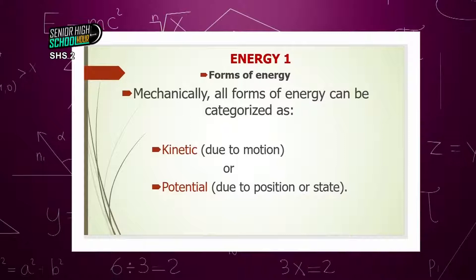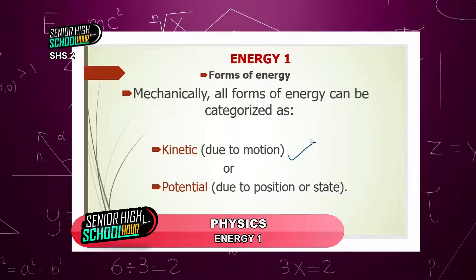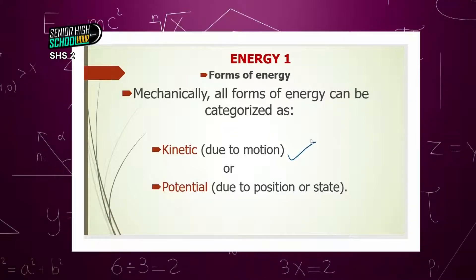We can move ahead and look at forms of energy. Mechanically, we can categorize all forms of energy as either kinetic — which is due to motion — or potential. Kinetic energy is the energy a body possesses by virtue of its motion. Potential energy is due to the position or the state where the body is found.